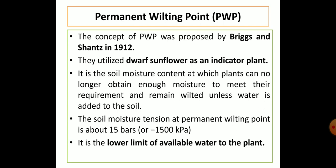Permanent wilting point is that soil moisture content at which plants can no longer obtain enough moisture to meet their requirement and remain wilted unless water is added to the soil. At this point, the soil moisture tension reaches minus 15 bars or minus 1500 kilopascals — plants do not have enough energy to extract the moisture. The permanent wilting point is the lower limit of available water, while field capacity is the upper limit.